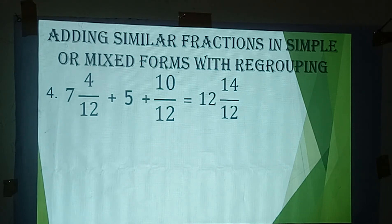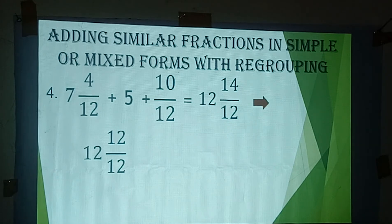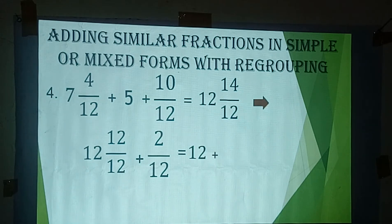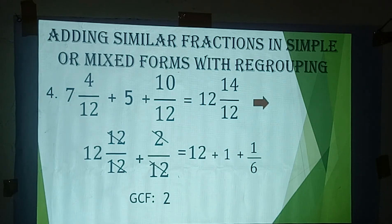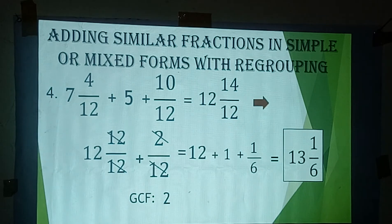Regrouping 12 and 14/12: that becomes 12 plus 12/12 plus 2/12, which equals 12 plus 1 plus 2/12. The GCF of 2 and 12 is 2; 2 divided by 2 is 1 and 12 divided by 2 is 6. So 12 plus 1 equals 13, giving a final answer of 13 and 1/6.